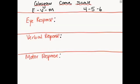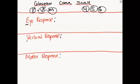The very first step in memorizing this scale is to memorize EVM456. You're probably wondering what I'm talking about right now. I'm talking about EVM: Eye response, Verbal response, Motor response. And 456: four possible points, five possible points, six possible points.